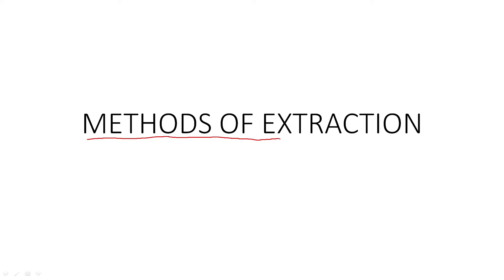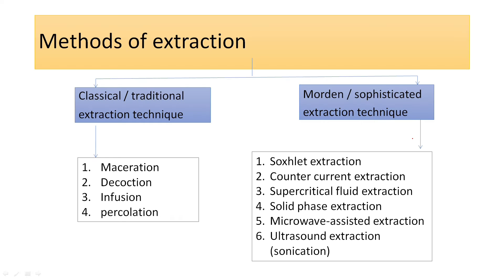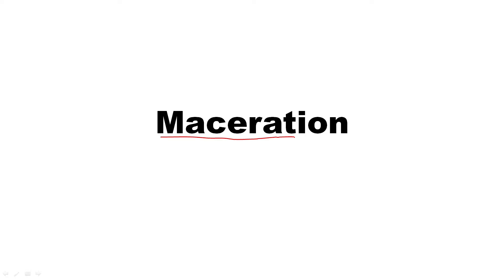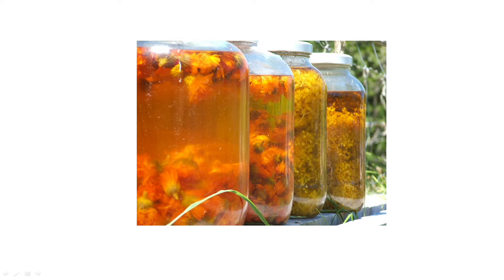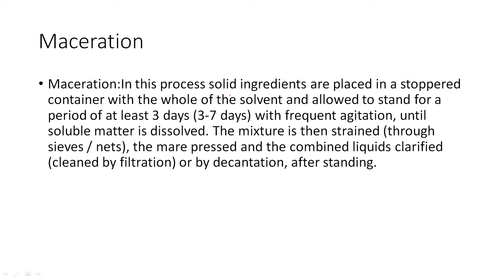We will check the types of extraction methods. There are traditional methods and modern methods. The first traditional method is maceration. Maceration is a traditional method where we take the plant material — for example the flowering part — and place it in a solvent.